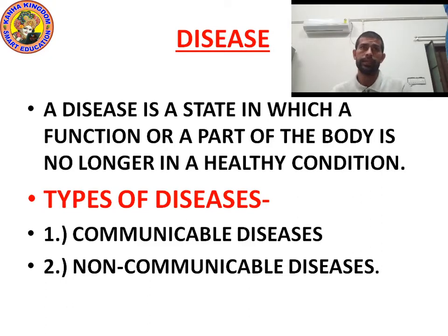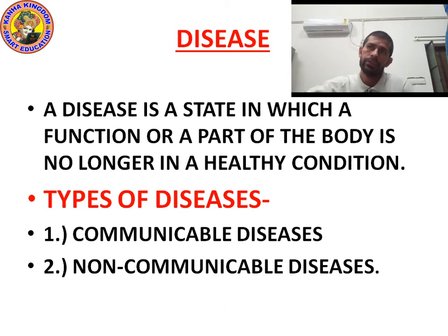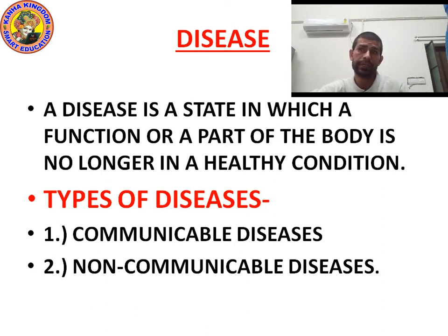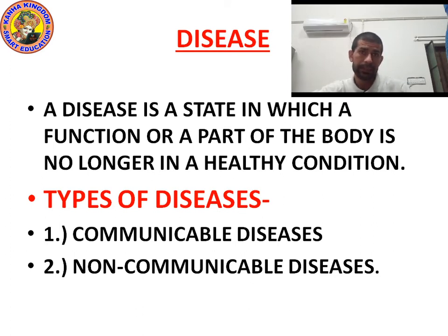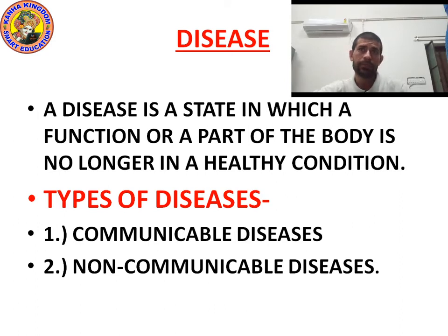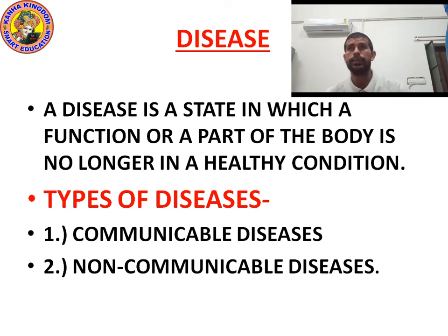Now let's move to the next topic: disease. A disease is a state in which a function or part of the body is no longer in a healthy condition — your organs do not work properly. There are two types of disease: communicable disease and non-communicable disease. Today we will discuss only communicable disease; next class we will study non-communicable disease.